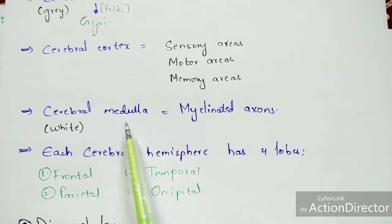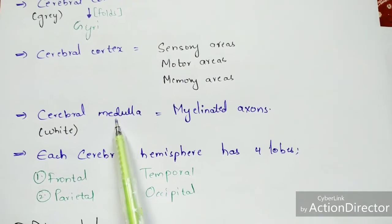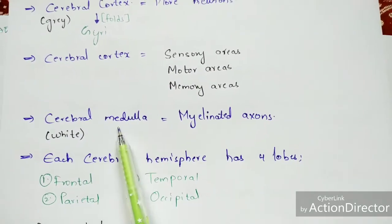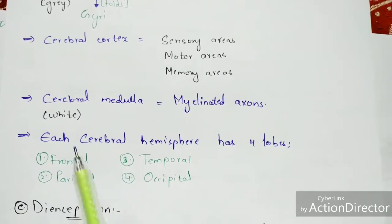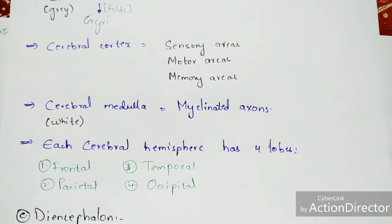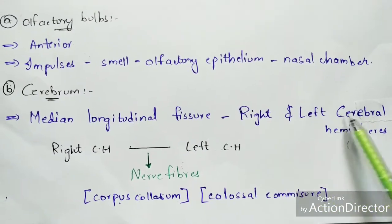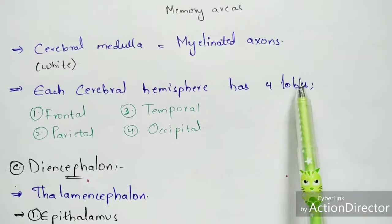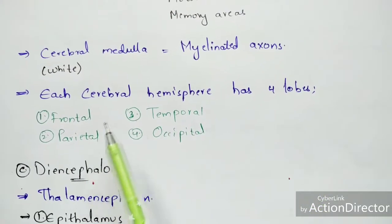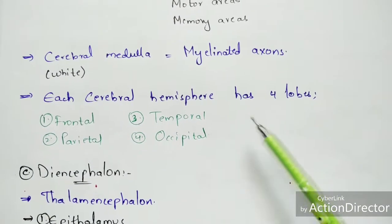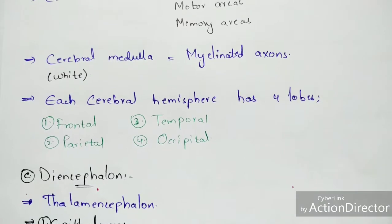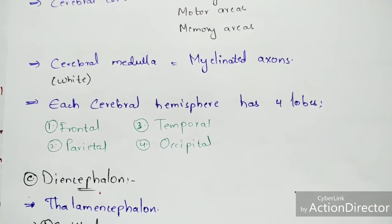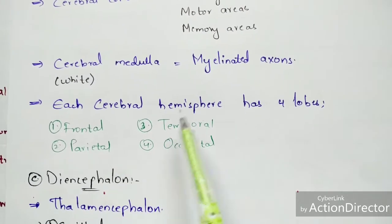The white matter of the cerebrum is called the cerebral medulla, which consists of myelinated axons. The cerebrum is divided into right and left cerebral hemispheres, and each cerebral hemisphere consists of four lobes: the frontal lobe, temporal lobe, parietal lobe, and occipital lobe. Since there are two hemispheres, there are a total of eight lobes in the cerebrum.